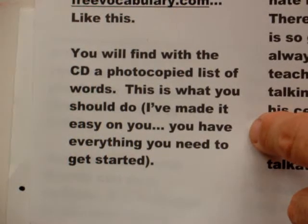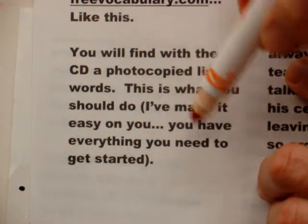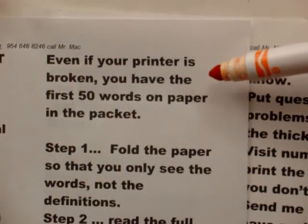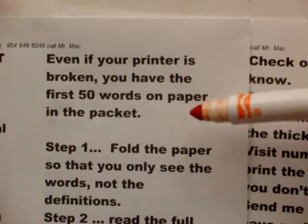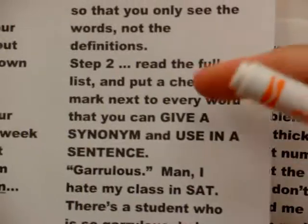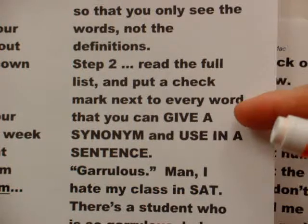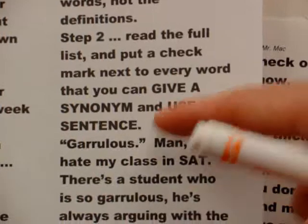You will find with the CD a photocopied list of words. I've made it easy — even if your printer is broken, you have the first 50 words on paper in the packet. You fold the paper so that you only see the words, not the definitions, then you read the full list and put a check mark next to every word you can give a synonym to.